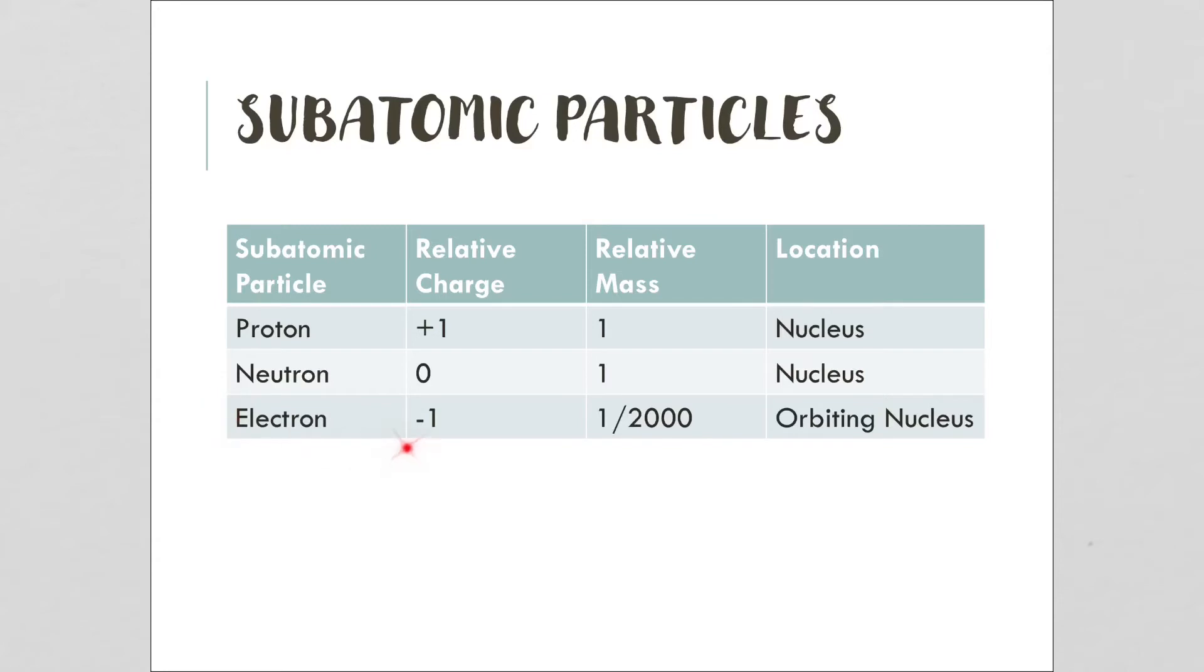Electrons have a relative charge of minus one. Each proton and each electron cancel each other's charge out. The relative mass is one-two-thousandth of a proton or a neutron. They are so tiny in mass that we don't count them in the total mass of an atom because they are negligible. We find electrons orbiting the nucleus.